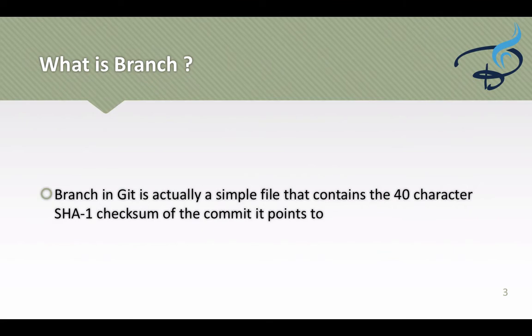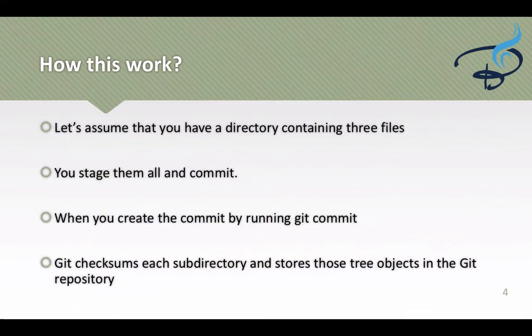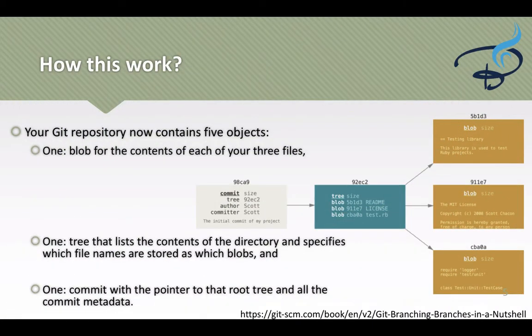So what is exactly a branch? A branch in Git is simply a file that contains a 40-character checksum pointing to a commit. This means a branch simply points towards a particular commit and says: I am originating from that commit. Let's move on and see how these things work. Suppose you have a directory containing three files, and you have staged and committed them — then Git stores not only these files but also some more information: one is a commit object and the second is a tree file.